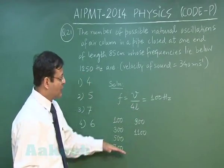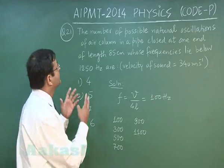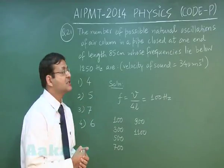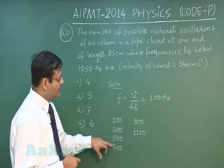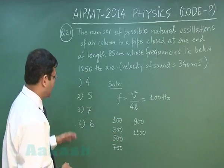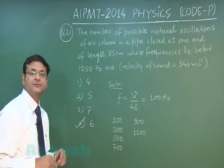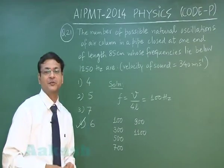So you can count only these many frequencies. In these many possible natural oscillations you can vibrate this closed end. In total if you count 1, 2, 3, 4, 5, 6. So the correct option for this question will be the fourth one and that explains question number 21.